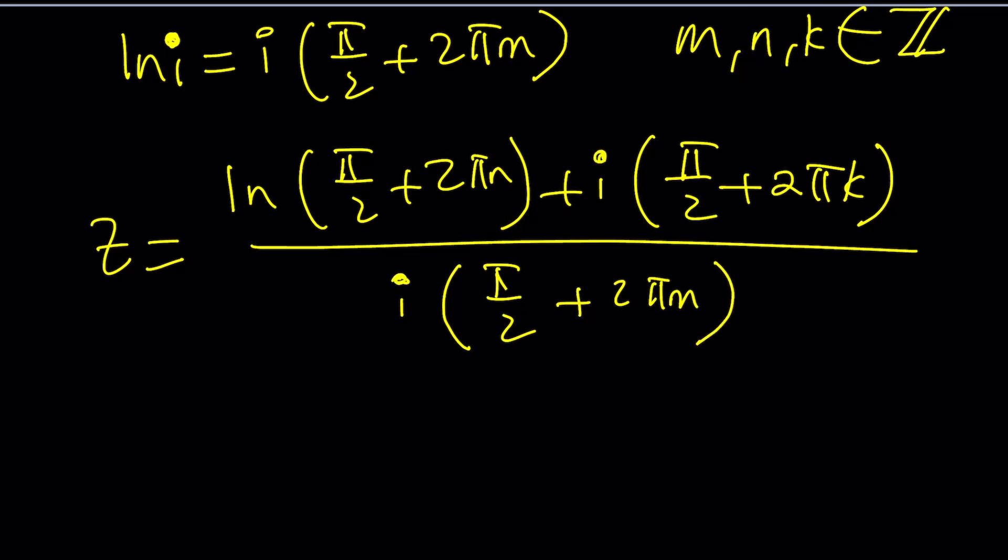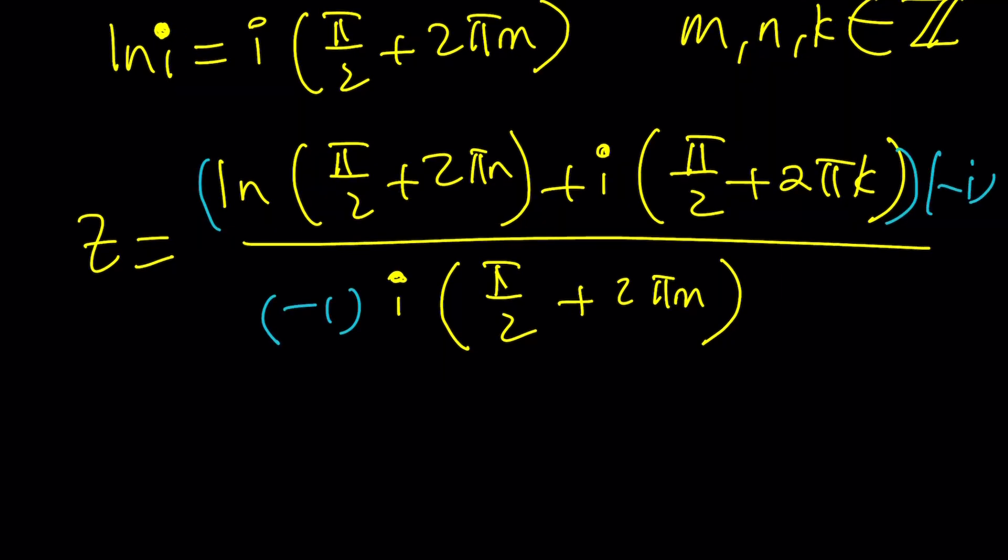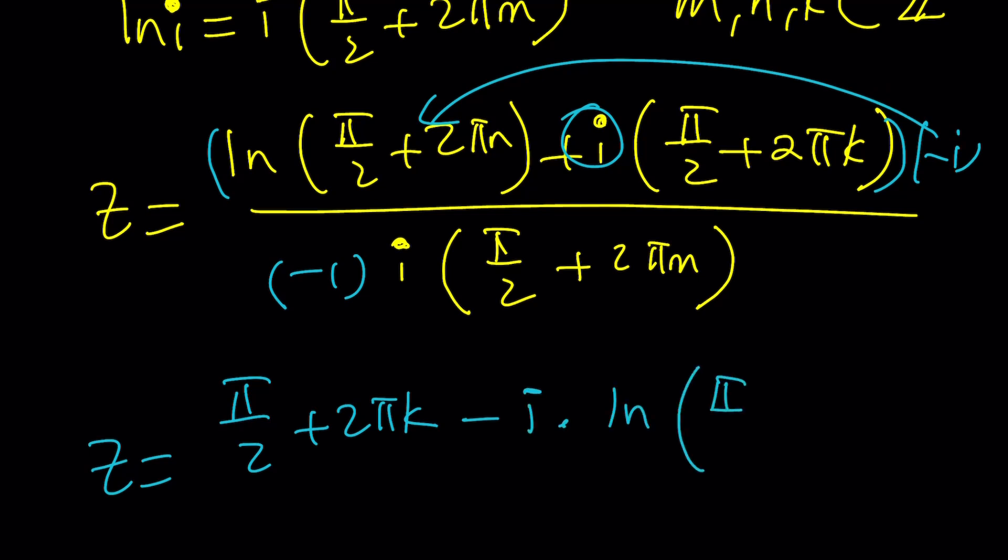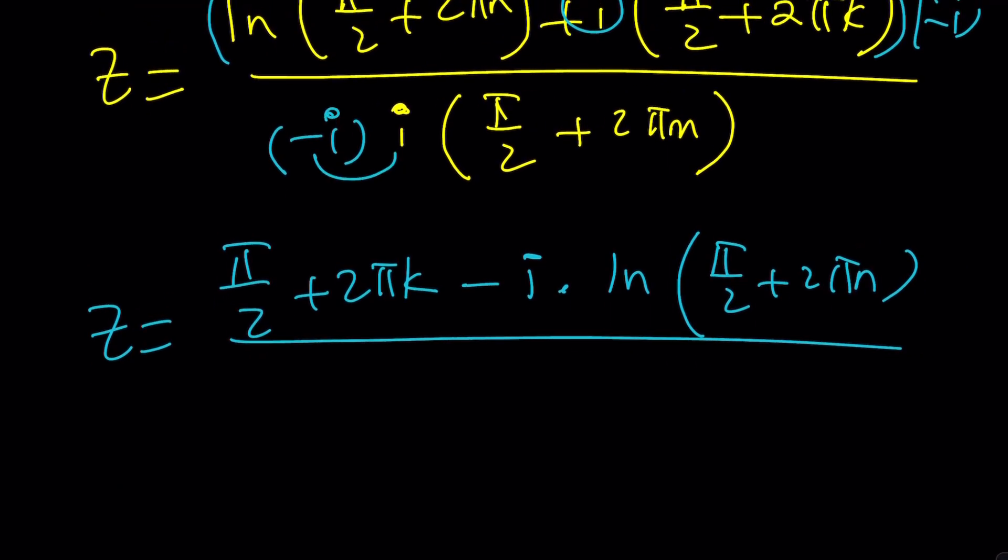Now we can multiply the top and the bottom by negative i. When you do, you're going to get negative i here and negative i here. When you distribute, you're going to get something interesting. This gives a negative i here and a positive one. So it looks like pi over 2 plus 2 pi k, because that's positive one, minus i times ln pi over 2 plus 2 pi n, all divided by pi over 2 plus 2 pi m.